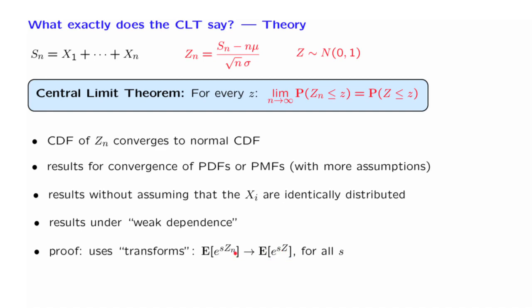We show that this expectation converges to the corresponding expectation if you have the standard normal Z in the place of Zn, and that this is true for all S, or at least for all S in some rich enough set. Then one appeals to some deep mathematical results that tell you that if this kind of expectation converges to that expectation, then the CDF of Zn must also converge to the CDF of Z. This proof involves various steps and appeals to some deep results from other fields of mathematics.